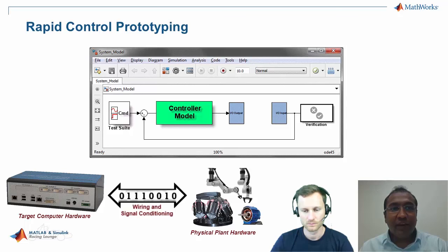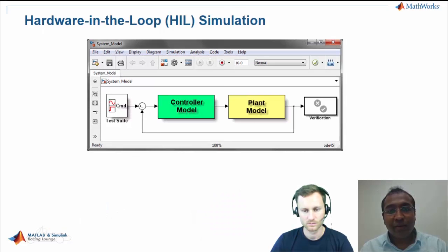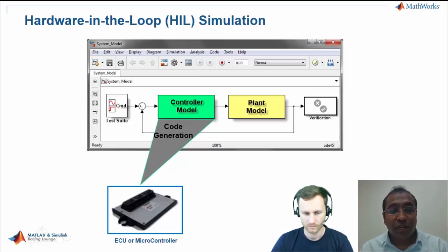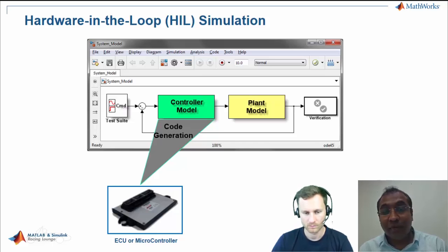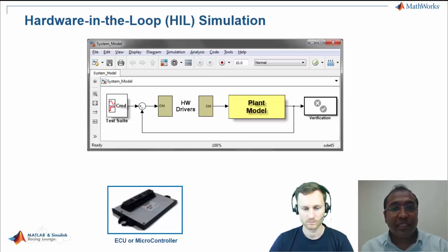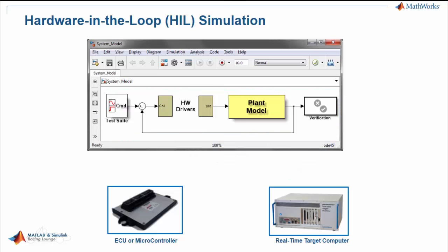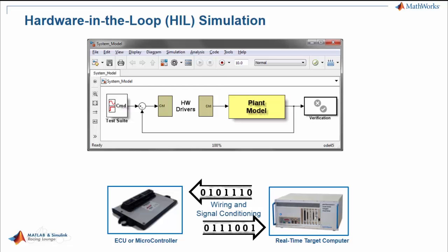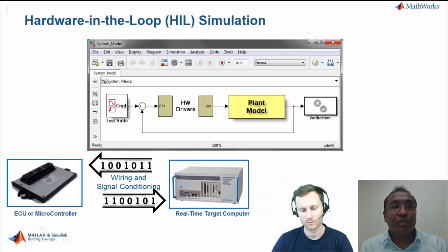Now let's see what Hardware-in-the-Loop simulation is. Again, you have the same block diagram with a controller model and plant model. But now you have the real ECU — your controller is running on it. This can be a Raspberry Pi microcontroller or even an Arduino. In the model, you replace the controller with driver blocks, and the complete plant model runs on a target computer. Both the ECU and the target computer talk to each other. You can check and test your algorithms, create test cases, and modify logic as needed. This is the other portion of real-time simulation called Hardware-in-the-Loop simulation.